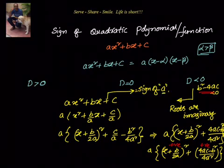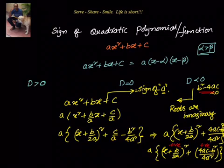From this discussion, by considering all three scenarios — discriminant greater than zero, equal to zero, and less than zero — what we understood is: whenever x lies between alpha and beta, that means between the zeros of the quadratic polynomial, the sign of the quadratic polynomial is opposite to the sign of a. In the remaining scenarios, the sign is the same as the sign of a.